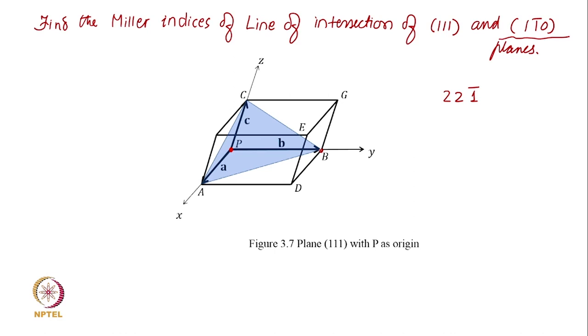What is the nice choice for origin of 1 1 bar 0? So B is a nice choice. From B you can easily draw 1 1 bar 0. So 1 from B will be where? 1 from B at point D.